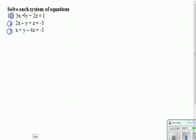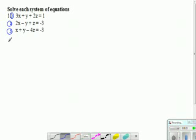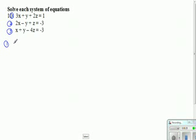When I look at equation 1 and equation 2, I've got a positive y and a negative y. So it's very easy to put together equation 1 and equation 2 to eliminate the y's. Equation 1 is 3x plus y plus 2z equals 1.